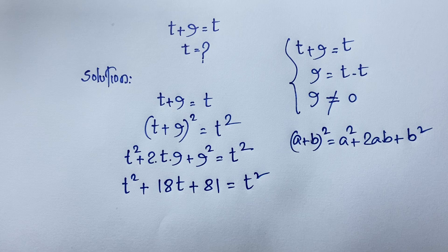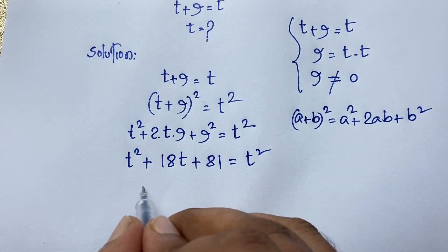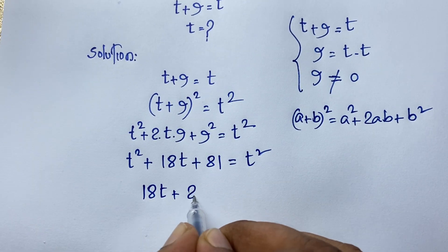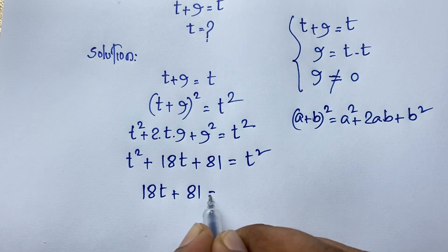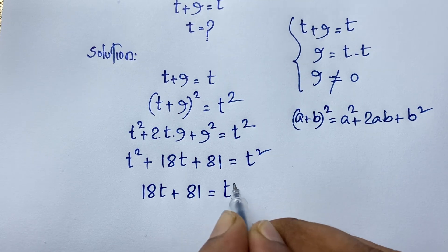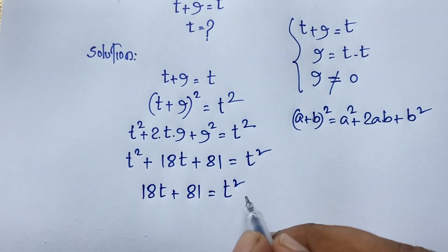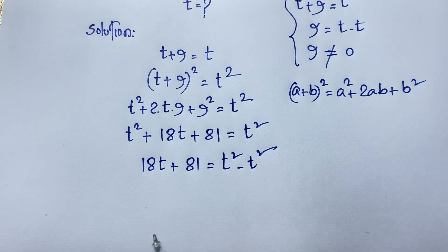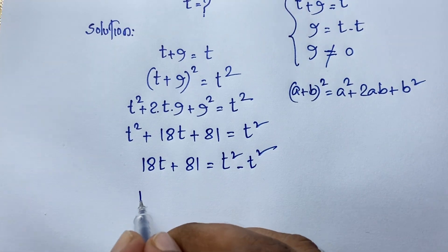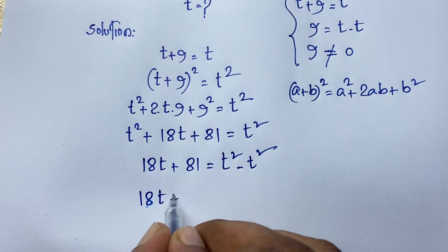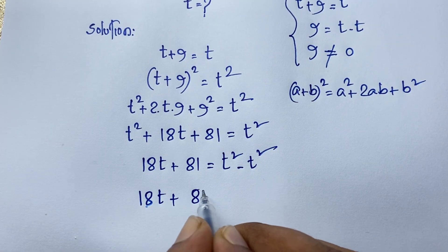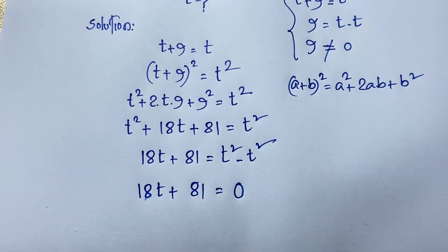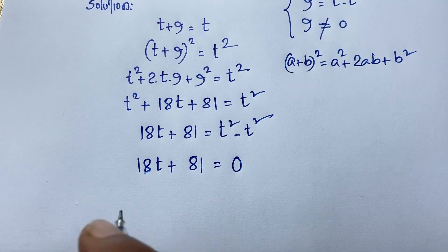So we have 18t + 81 = t². Moving t² to the left side gives negative t², so t² minus t² cancels to 0, leaving 18t + 81 = 0.